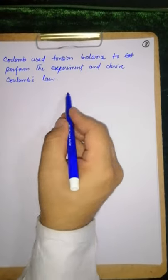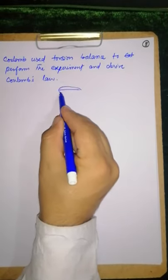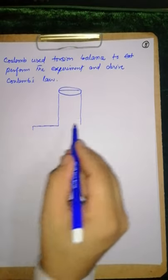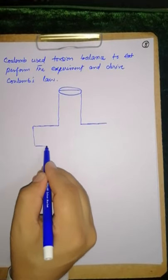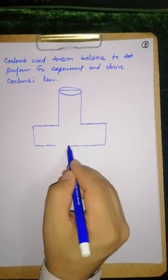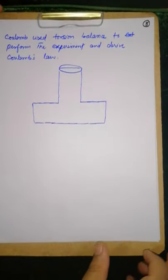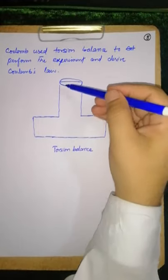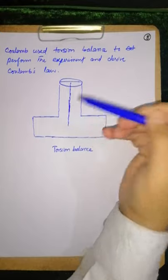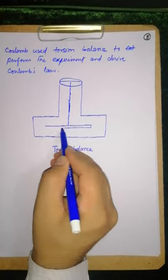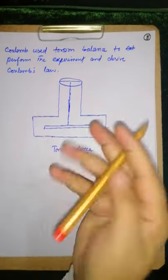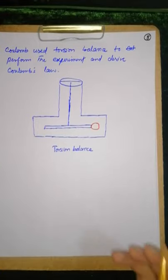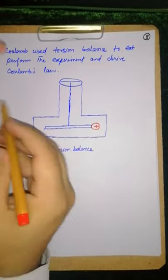The torsion balance - torsion balance was basically designed by Cavendish to calculate the value of G, the universal gravitation constant. Here is the device. It has a fiber hanging like a rod. On this rod, there is a sphere on both sides. One side has positive charge, both sides can have negative charge.